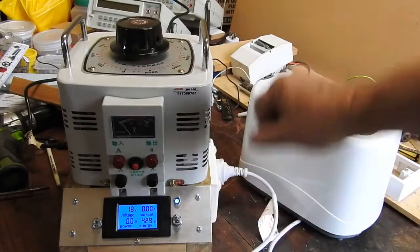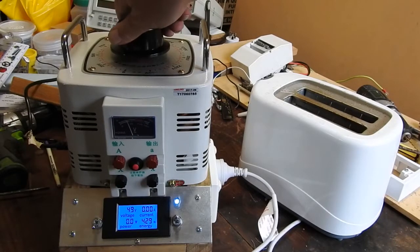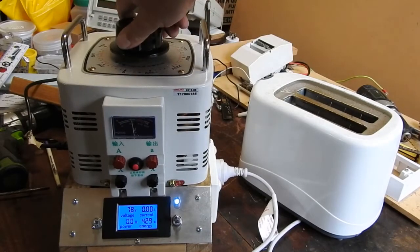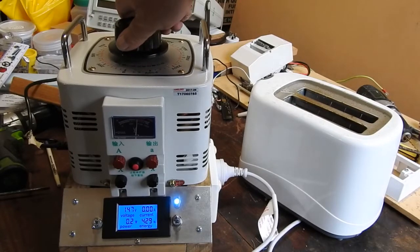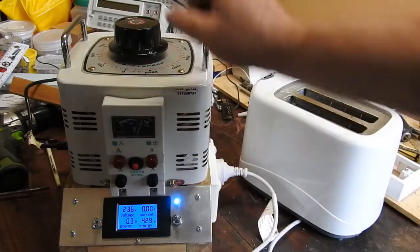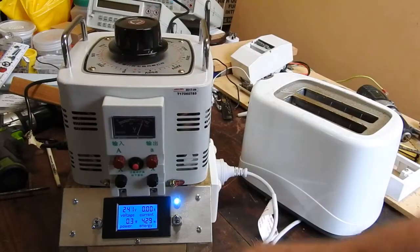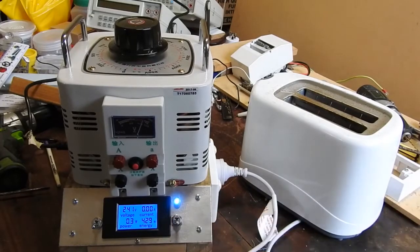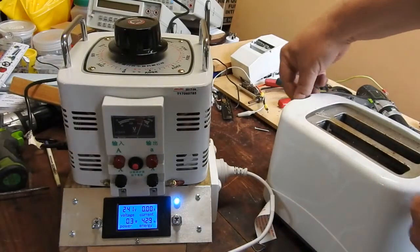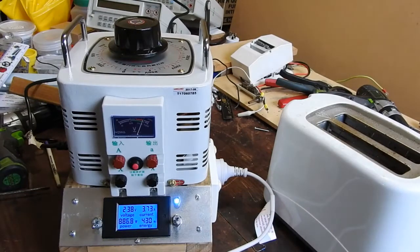And I'll wind it up. 12, we're getting some glow out of the LED. Volts here, volts here. 240. Ish. Apply power to the toaster. 886 watts.